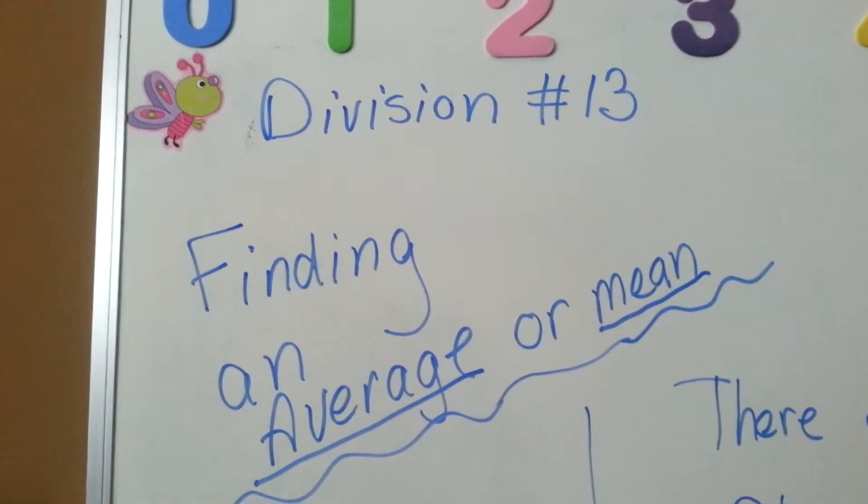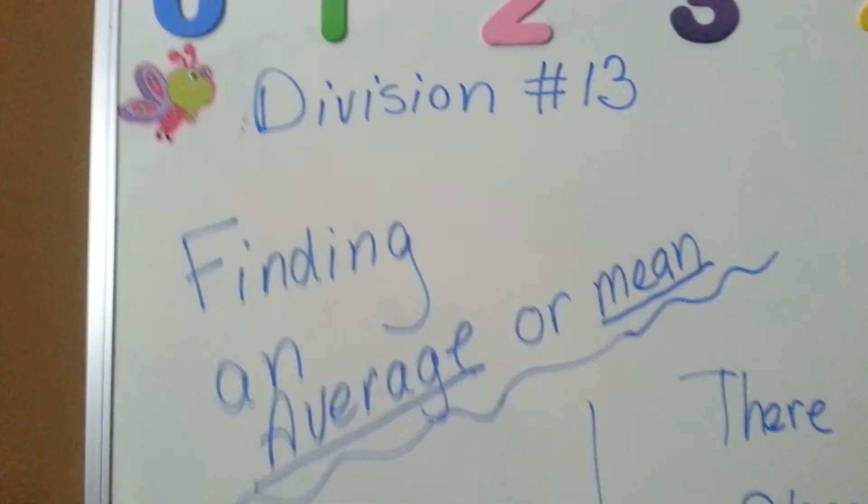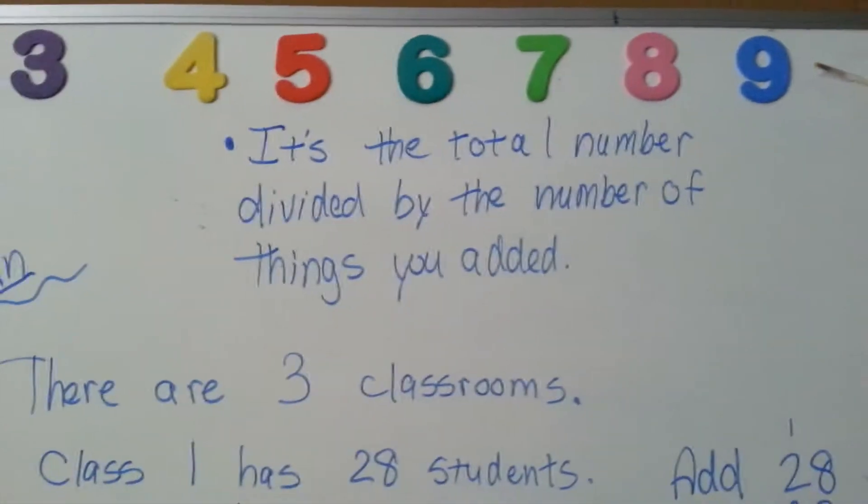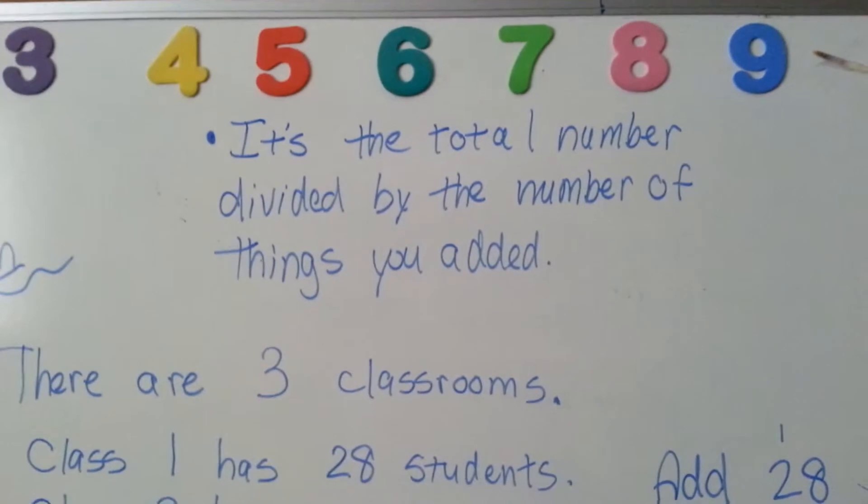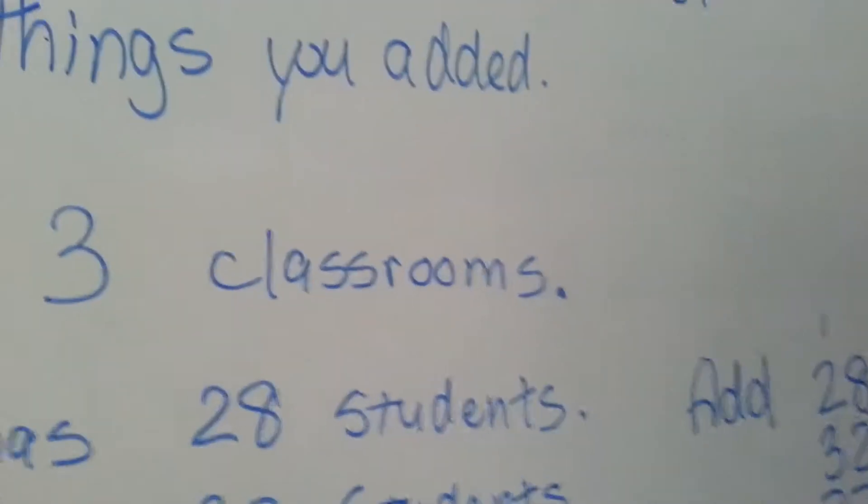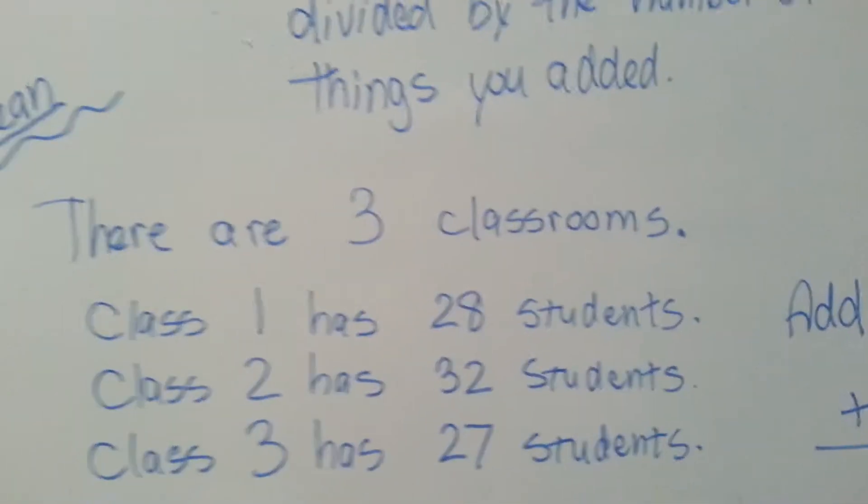Division number 13, finding an average or a mean. An average or a mean means an approximation. It's the total number divided by the number of things you added. So what does that mean? Okay, well, let me explain.